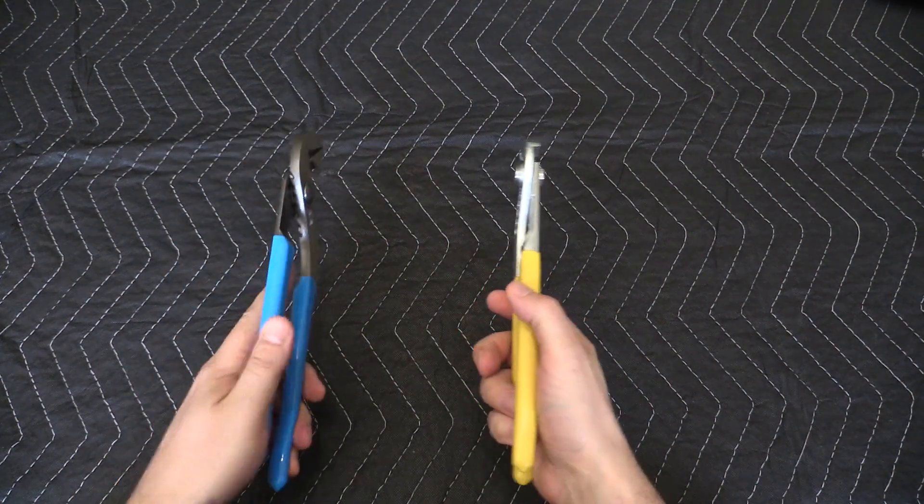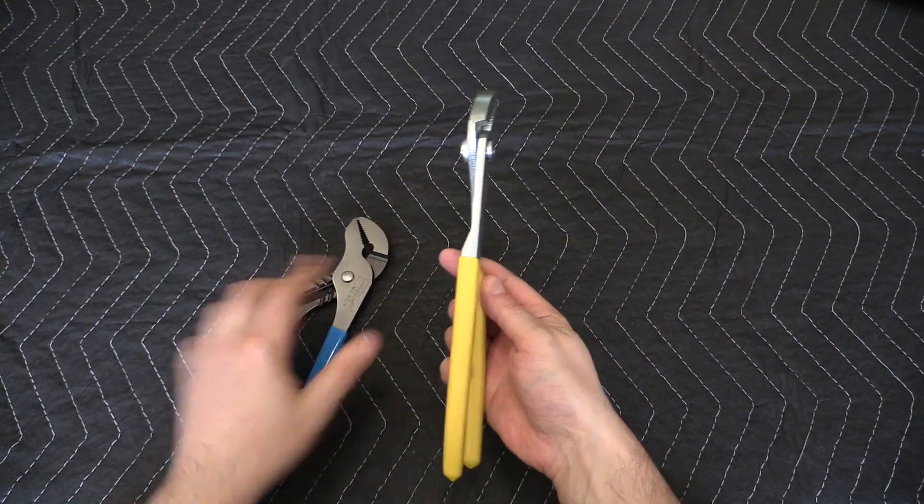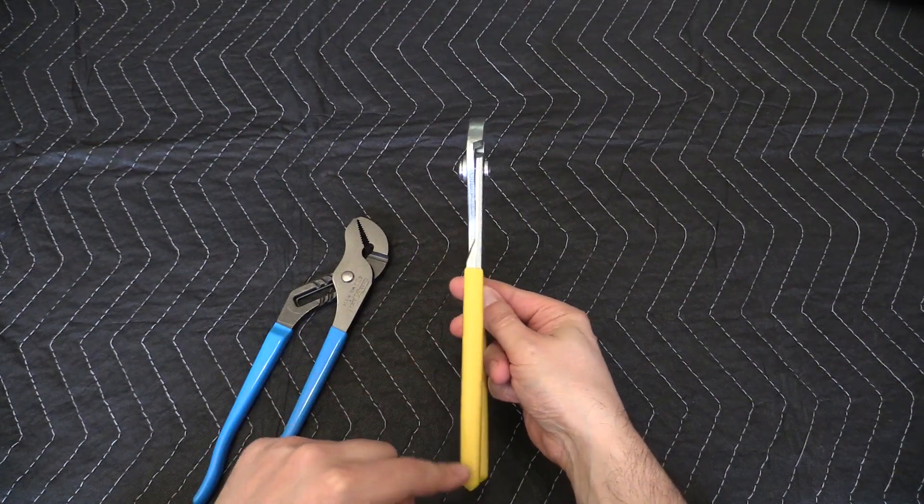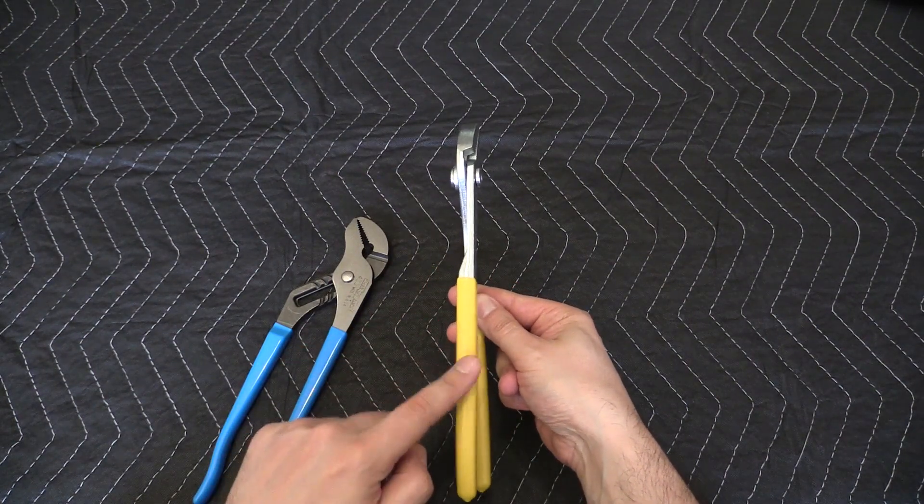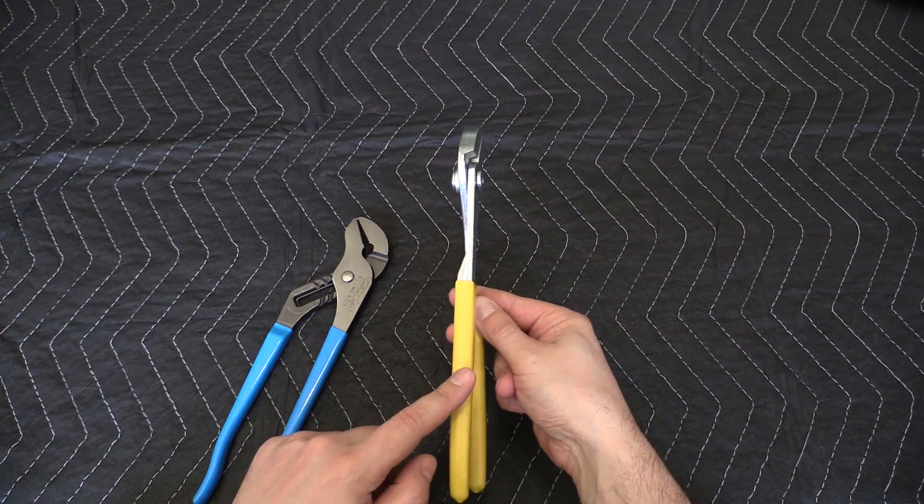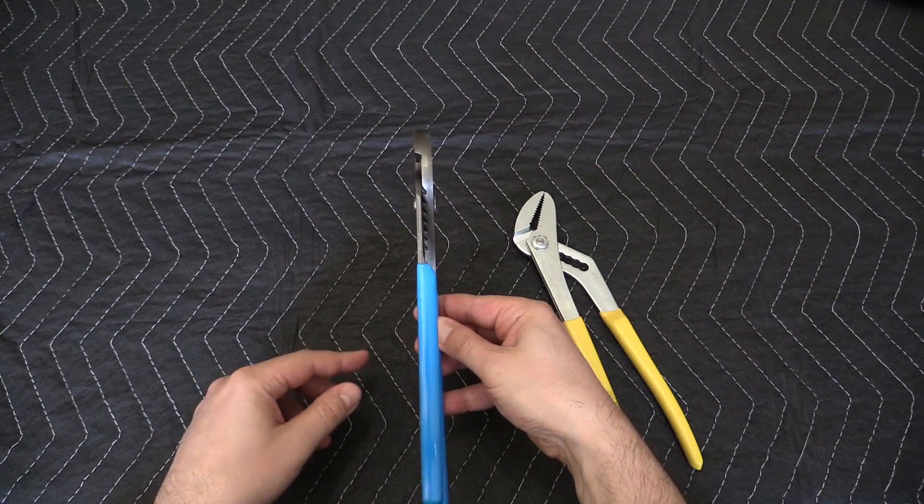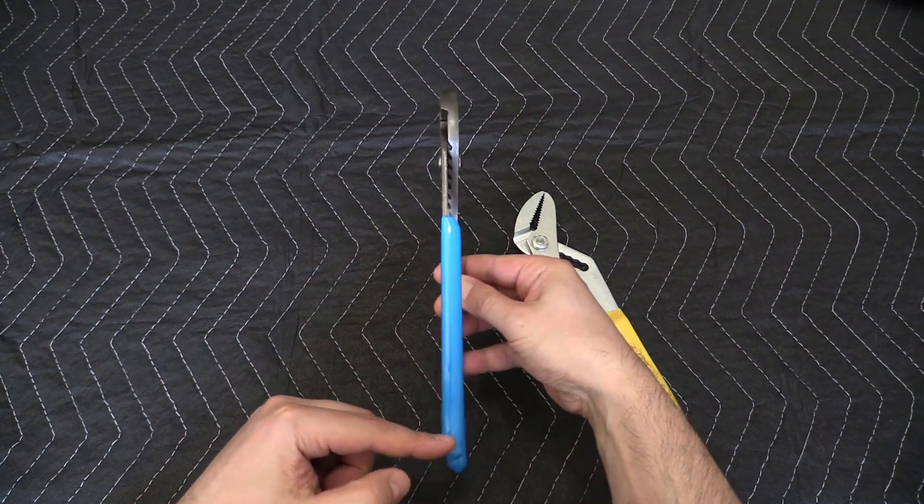Oh and before I forget there's one more thing. You can see the handles, they're crooked. This should have never made it past quality control but it did. With the channel locks, it's all straight, I got no complaints.